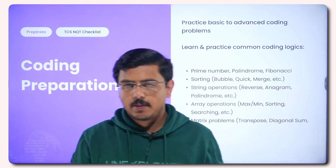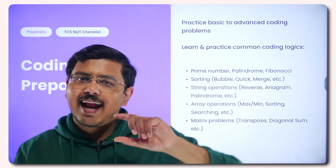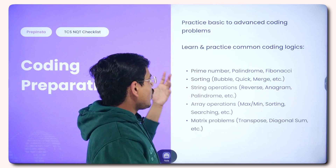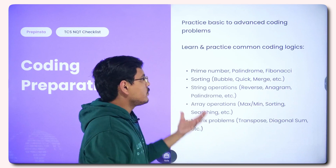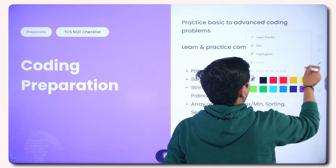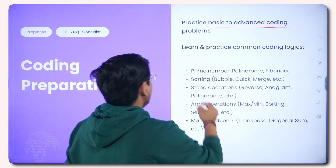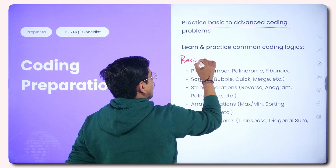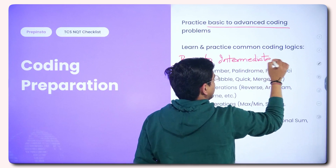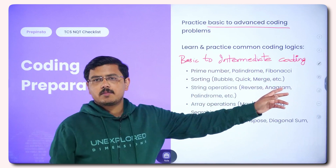The second part is coding preparation. I have devised this checklist to help you track your preparation and whether you're on the right path. Common coding topics include: prime numbers, palindrome, Fibonacci, sorting, string operations, array operations, and matrix problems. Practice all kinds of problems from basic to advanced coding, but focus more on basic to intermediate level coding — that is the most important range.